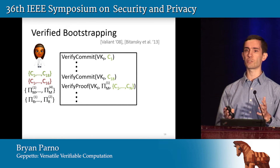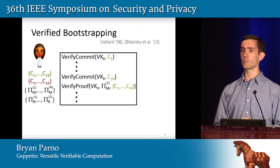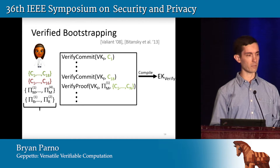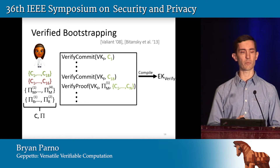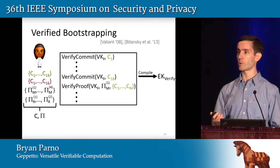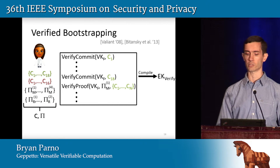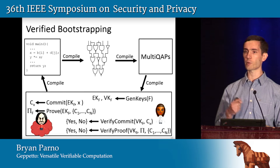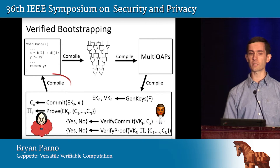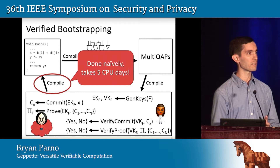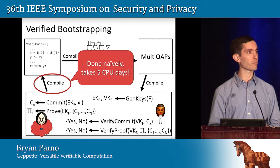If we look at all the code Alice is going to run to do verification, we can think of that as one big C program. We can run Geppetto on it again, generate a new evaluation key for that verification step, and outsource that operation as well. We can similarly turn all these commitments and proofs into a single commitment and proof to the larger set of data, so Alice is back to a world where she only looks at one commitment and one proof to check that the entire computation was done correctly. This adds a layer of recursion. Unfortunately, if you do this naively, the time to verify a single commitment or proof can take upwards of five CPU days — not great from the prover standpoint.